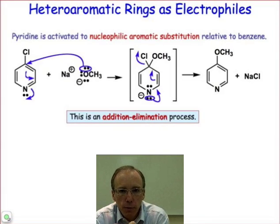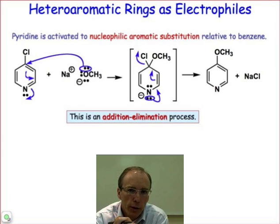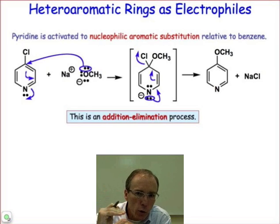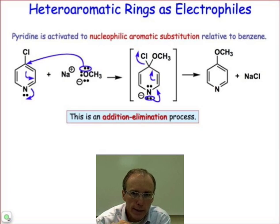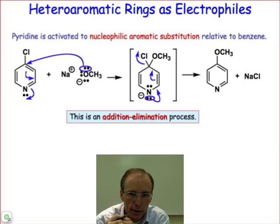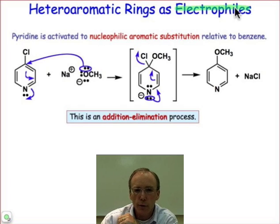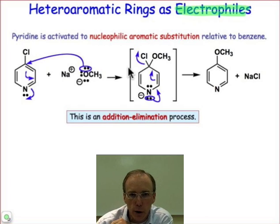Remember that the π system of the six-membered heteroaromatic ring is electron deficient. It has a very low-lying LUMO, and a low-lying LUMO means that it's accessible to nucleophilic attack. The π system — π star in particular — can serve as an electron acceptor or an electrophile.